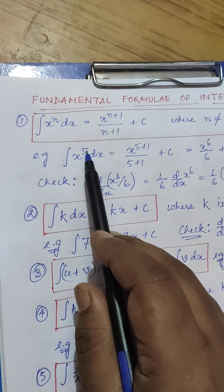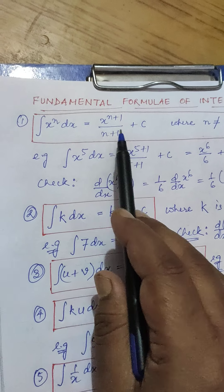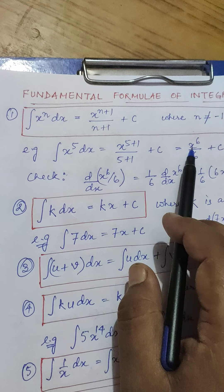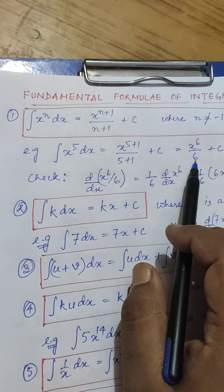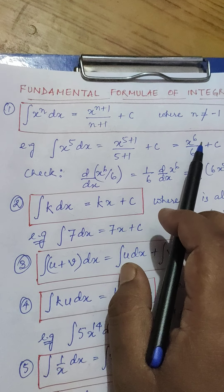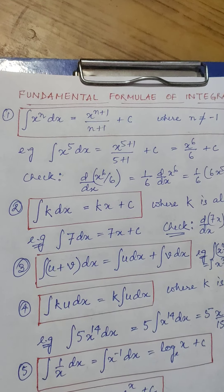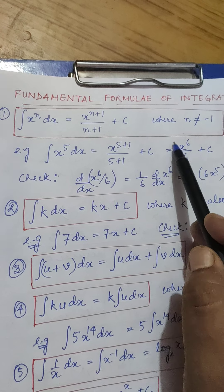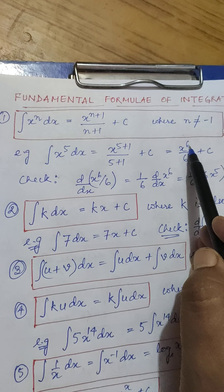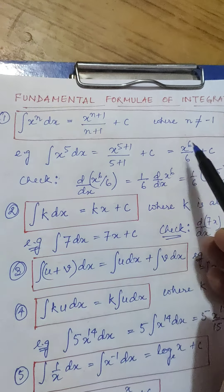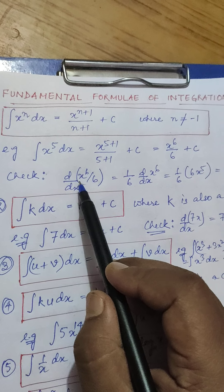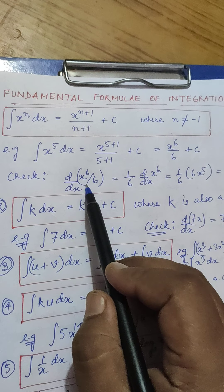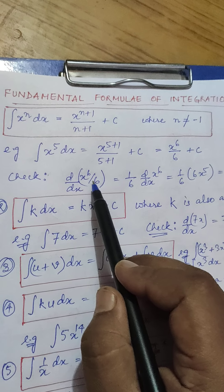Let's take an example: integration of x raised to the power 5. Here the value of n is 5, so as per the formula, it is x raised to the power 5+1 divided by 5+1, which gives x raised to the power 6 by 6. Now let us check whether this is correct or not. Since integration is the reverse process of differentiation, if we differentiate x^6/6, we should get x^5. So let us apply d/dx to x^6/6: the constant 1/6 comes out.